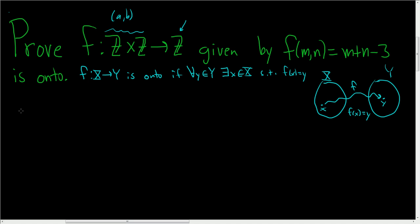Alright, so in this problem we have to show that this function is onto. So if you see, look at the definition, this is capital X and this is capital Y. So proof. So we have to start by taking a little y in capital Y. So take any little y in capital Y.